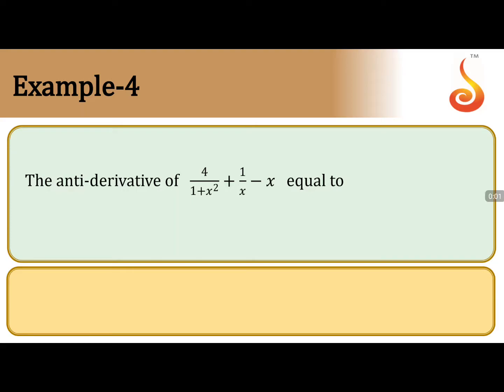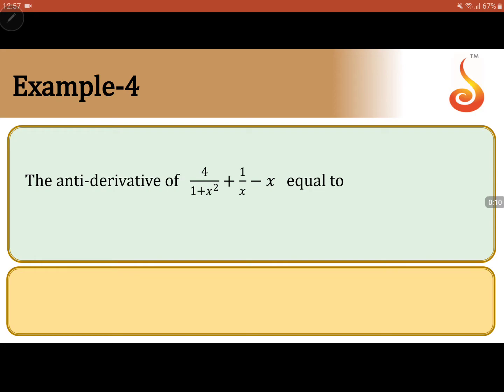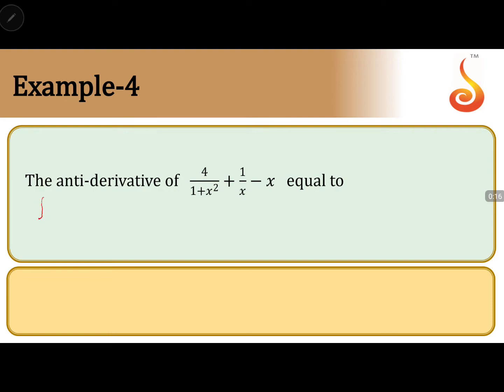The anti-derivative of 4/(1 + x²) + 1/x − x is equal to — okay, the anti-derivative is nothing but the reverse process of the derivative, that is integration. So we need to find the integral of 4/(1 + x²) + 1/x − x.